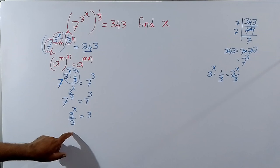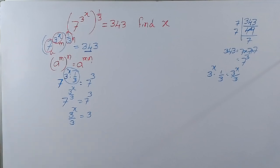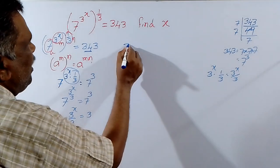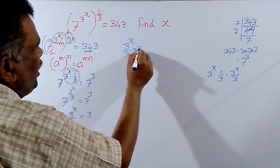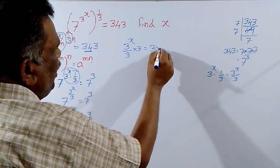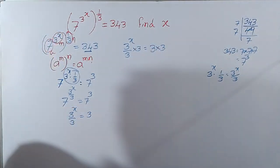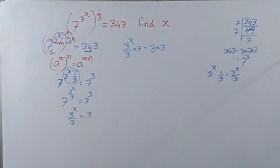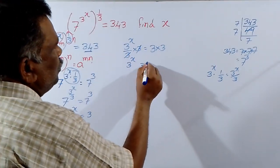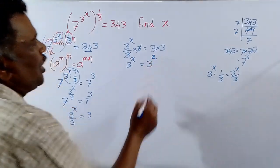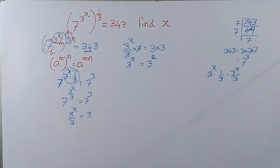Now this 3 divides on this side. So that's why we are multiplying both sides by 3. 3 power x by 3 into 3 equal to 3 into 3. Both sides multiply by 3. Then 3, 3 cancel. 3 power x equal to 3 square.